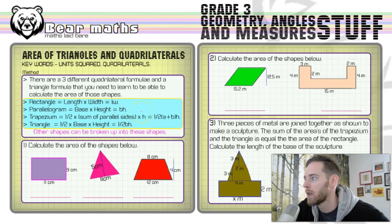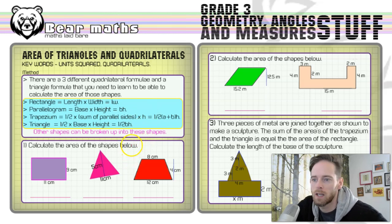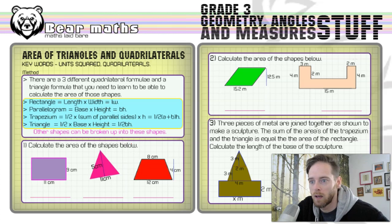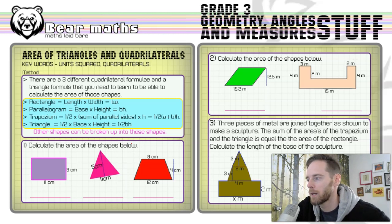Other shapes can be broken up into these shapes and you can work out the areas of compound shapes. Compound shapes are shapes that have been stuck together to make one big shape. You need to split them up into the respective shapes, calculate the areas for each, and then add all the areas together at the end.